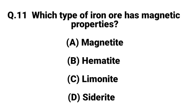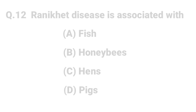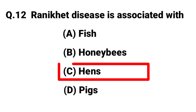Question number eleven: which type of iron ore has magnetic properties? Answer: A, magnetite. Question number twelve: which type of iron ore is associated with? Answer: C, hands.